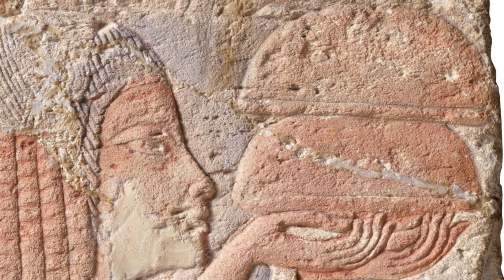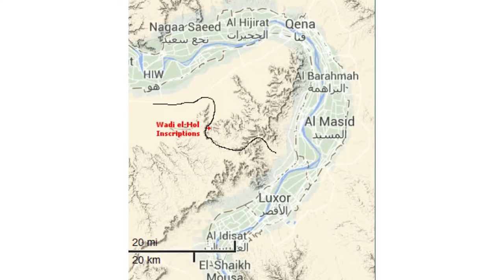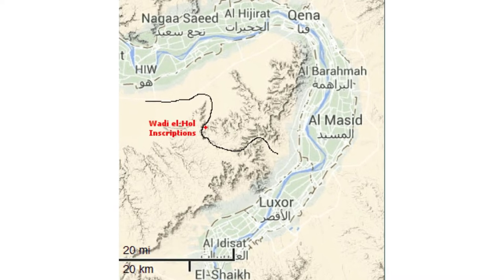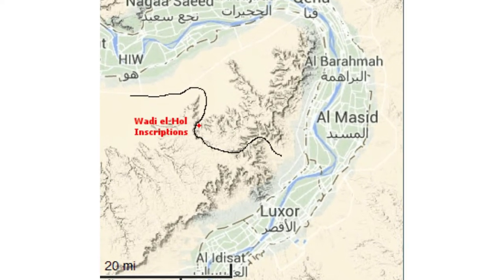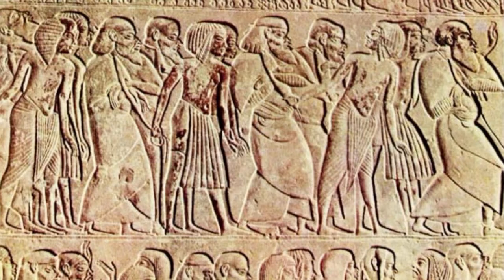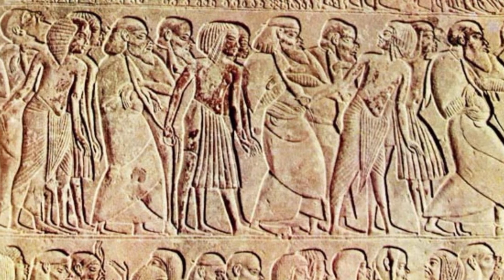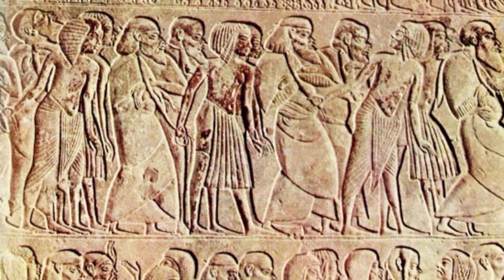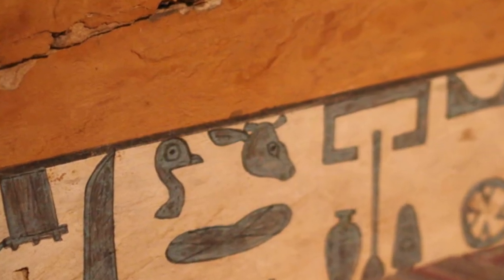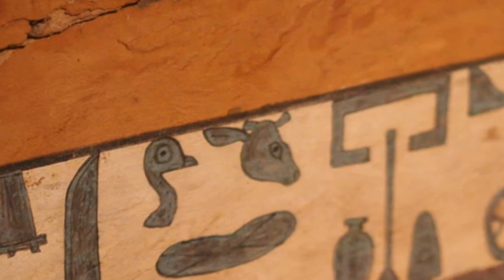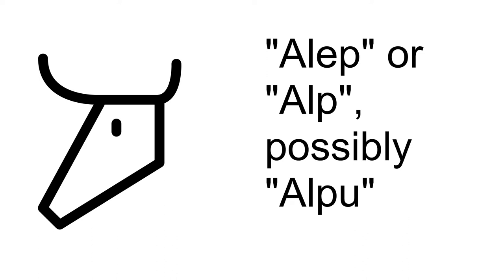where the sound the symbol makes is determined by the first or most prominent sounds in its name. For example, one symbol for the sound t was a loaf of bread, or tau in Egyptian. Around 1850 BCE, Canaanite migrant workers working in Egyptian lands began adapting hieroglyphs to their own purposes. The Canaanites spoke their own western Semitic language, and as such they applied the rebus principle based on their own words. As an example, in Egyptian, the symbol of an ox head was pronounced something like ka.